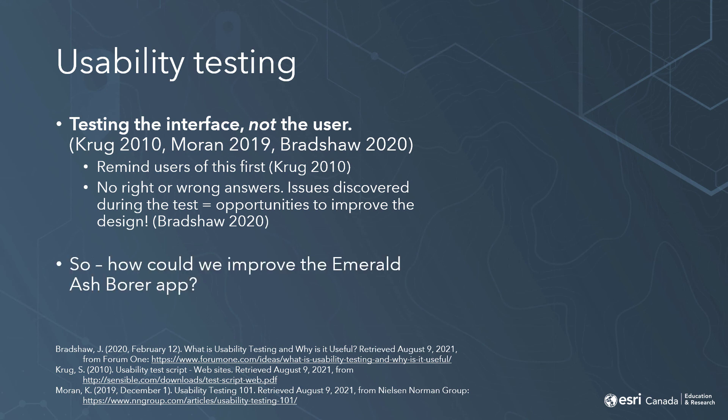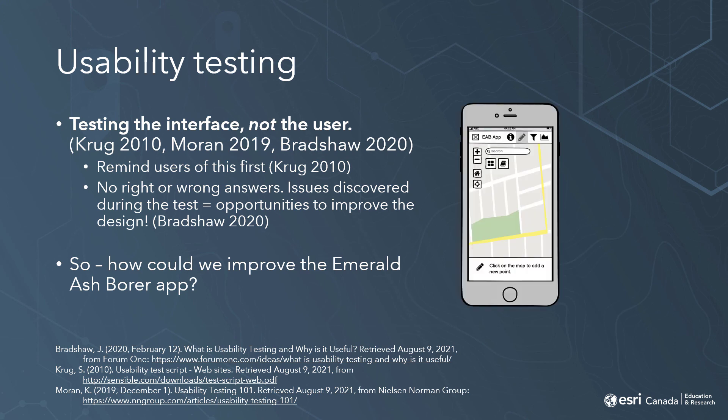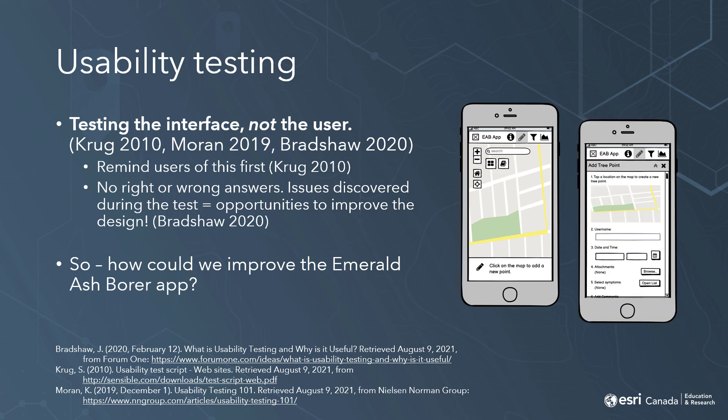For the Emerald Ash Borer app, there was an instruction at the beginning that the user found confusing about adding a point to the map. Rather than considering this a mistake on the user's part, or simply rewording the instructions, we could try to make the interface more intuitive — maybe prompting users to add a point to the map before opening the rest of the form, or embedding a map into the form itself. We can change this in our prototype and then go back and test it with users again.